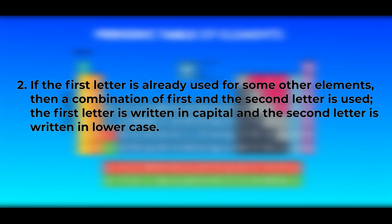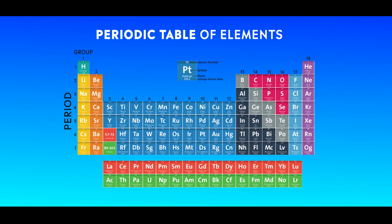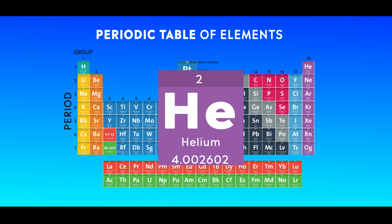Number 2: if the first letter is already used for some other element, then a combination of the first and the second letter is used. The first letter is written in capital and the second letter is written in lowercase. Let us look at helium, for example. Helium is given the symbol He. Now why do you think the symbol of helium is He and not H? Well, we have seen that H is already the symbol of hydrogen. So therefore, helium is given the symbol He — a combination of the first letter and the second letter of the name, with the second letter written in lowercase.